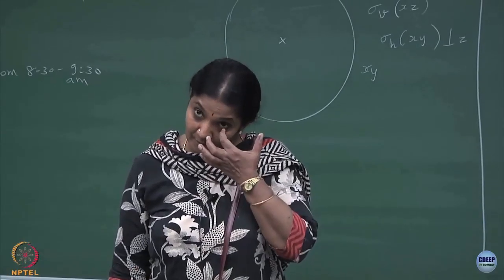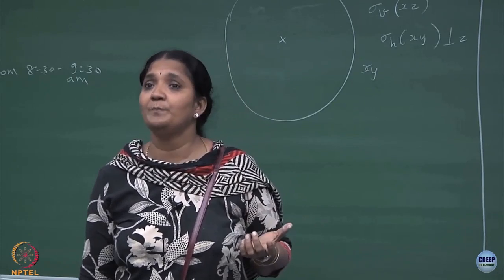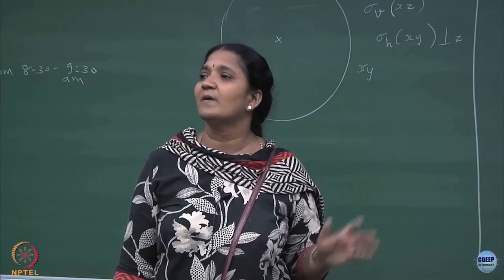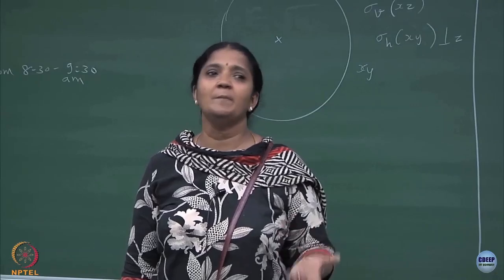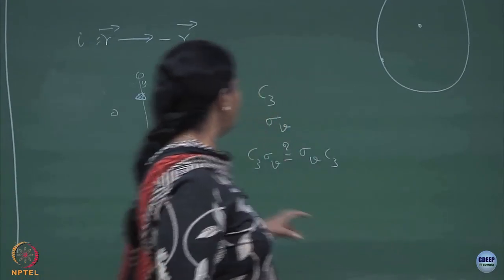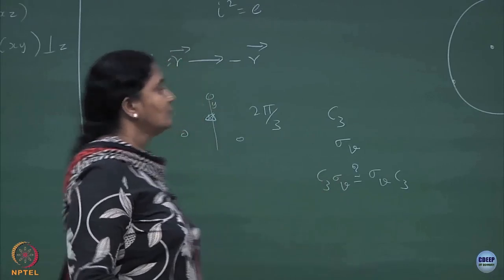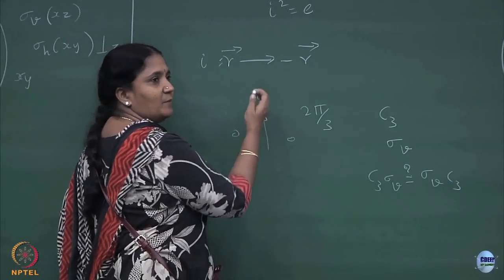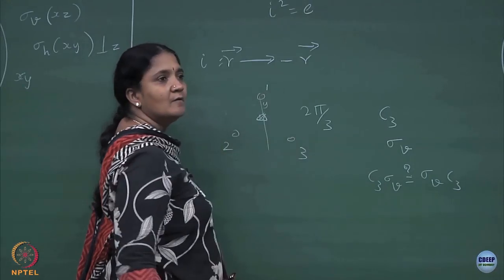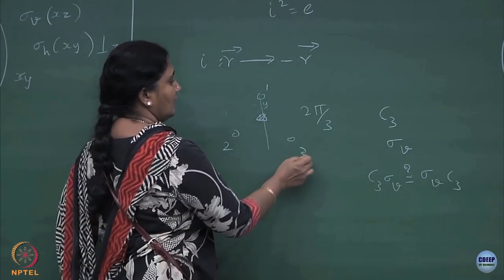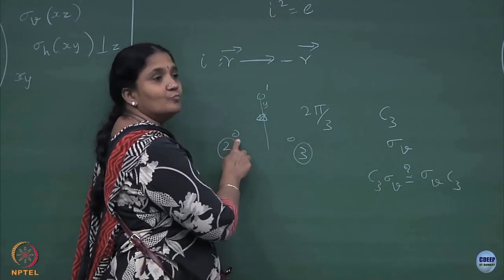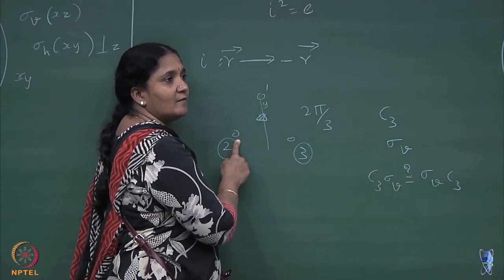These questions will tell you whether it is a direct product group, a semi-direct product group, or merely generators from which you can write the group. To identify a semi-direct product you need to check whether there is an invariant subgroup. To investigate, let us put the mirror plane here and number the atoms.